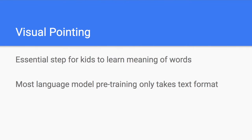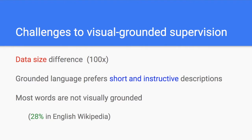One very important component of interaction with the world is visual pointing. There are research papers doing this kind of study, and it's concluded that it's an essential step for kids to learn the meaning of words. Just like most language models — like those I previously mentioned — only take text format input when doing pre-training. That may be the flaw or limitation of language modeling by only receiving text input. And how do we solve that? This paper wants to talk about adding a visually grounded signal and doing visually grounded supervision.